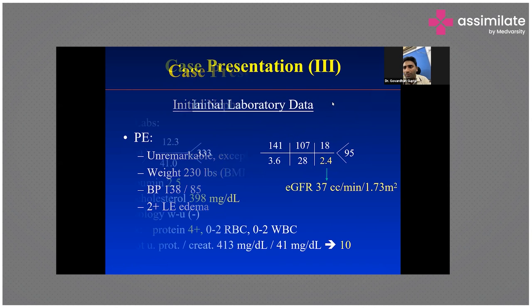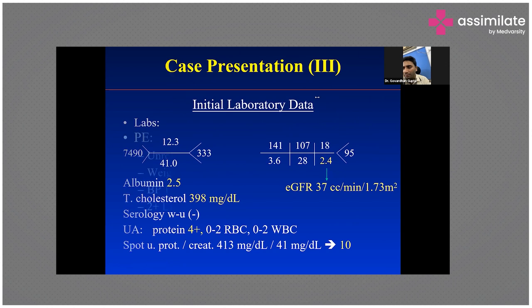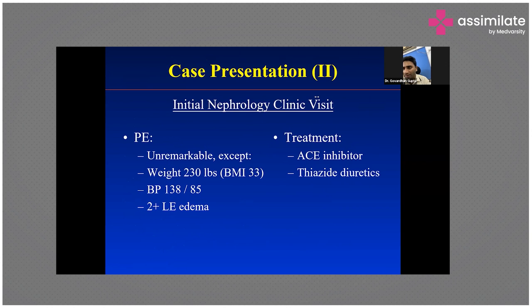The creatinine was behaving in a zigzag manner — sometimes 2.3, 3.6, 2.8 — and we are basically dealing with a CKD stage 3b patient where risk factors for CKD such as hypertension and obesity are already present, which we try to control.